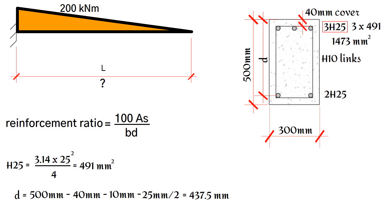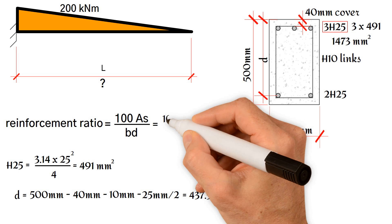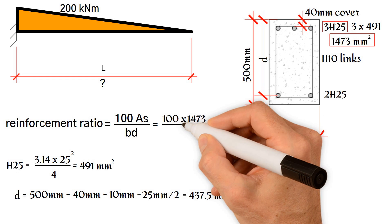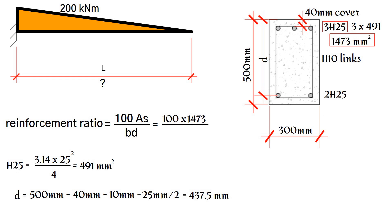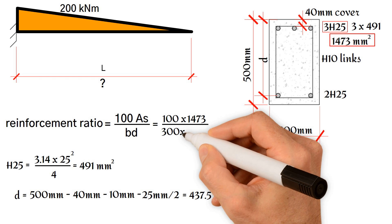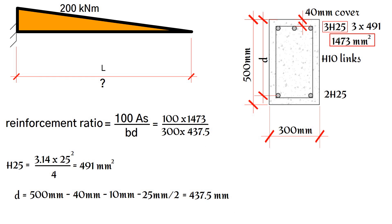We should now be able to calculate the reinforcement ratio, which is equal to 100 times the total provided area divided by the effective area of the section, which is 300mm × 437.5mm.